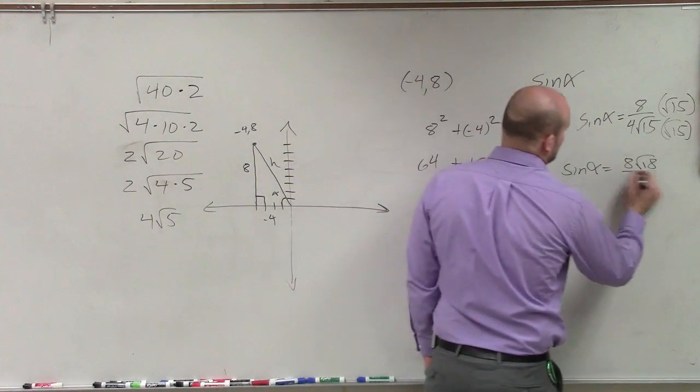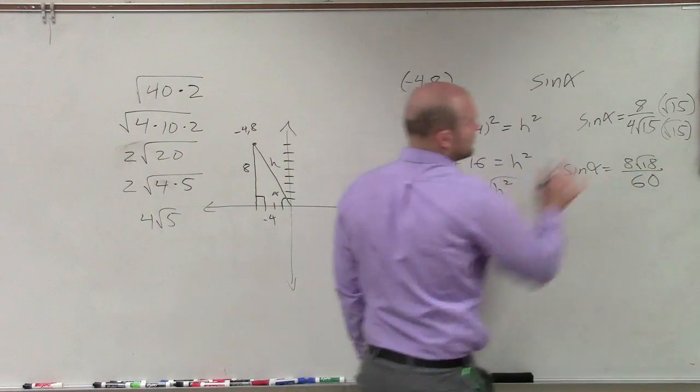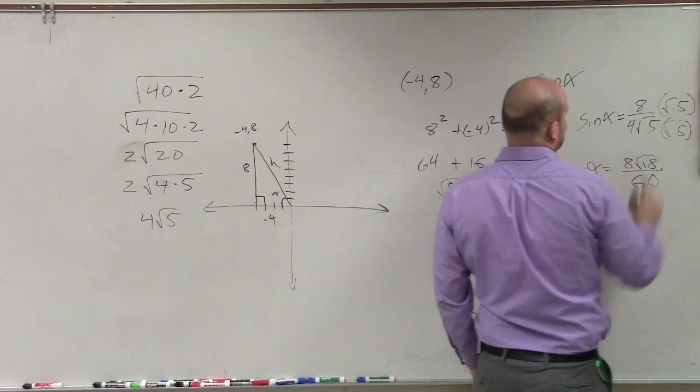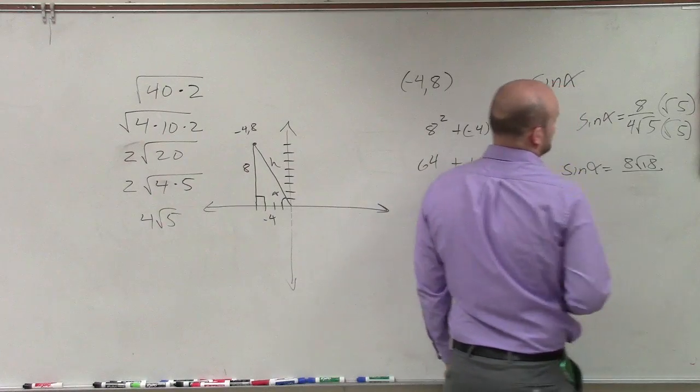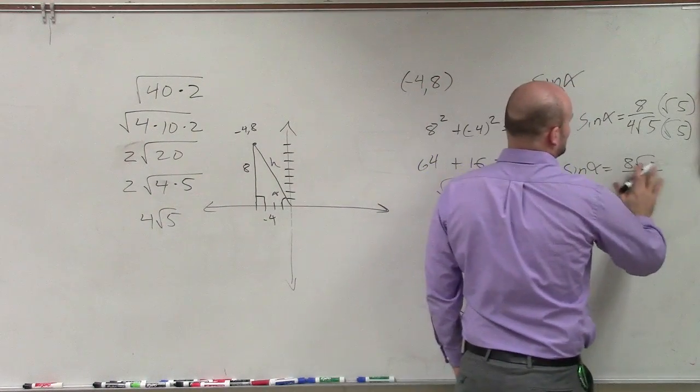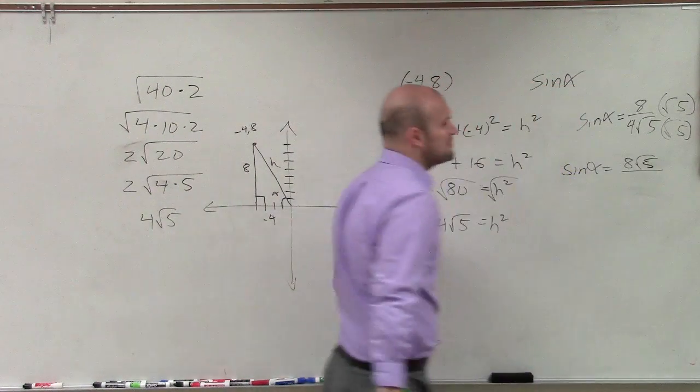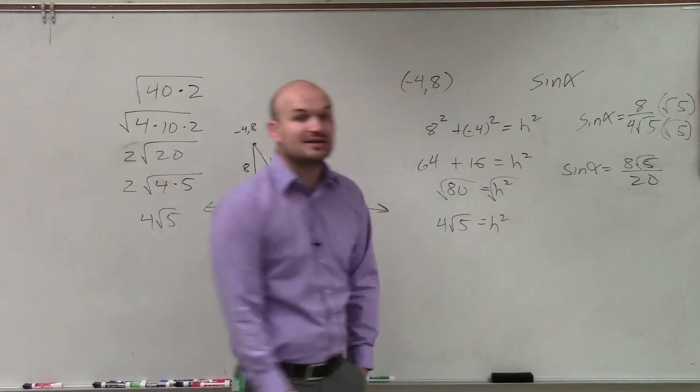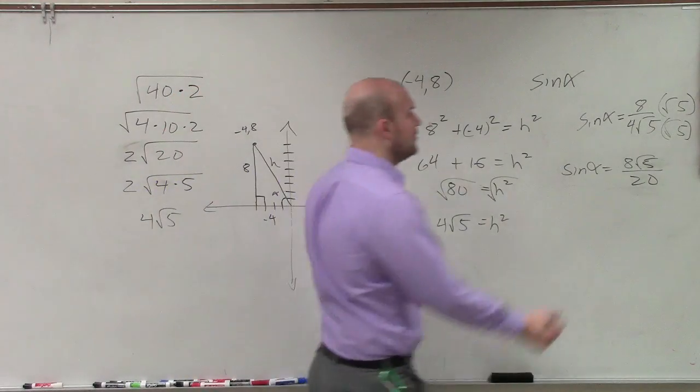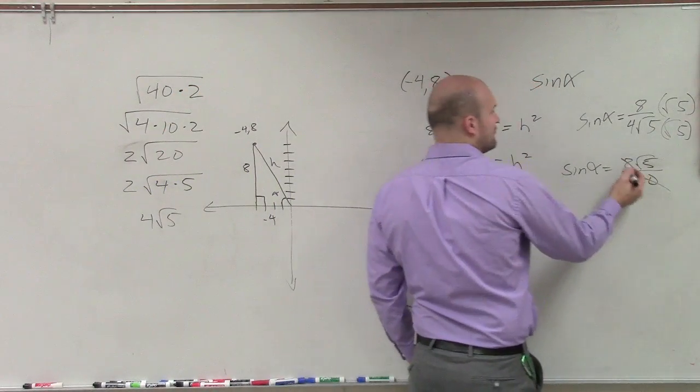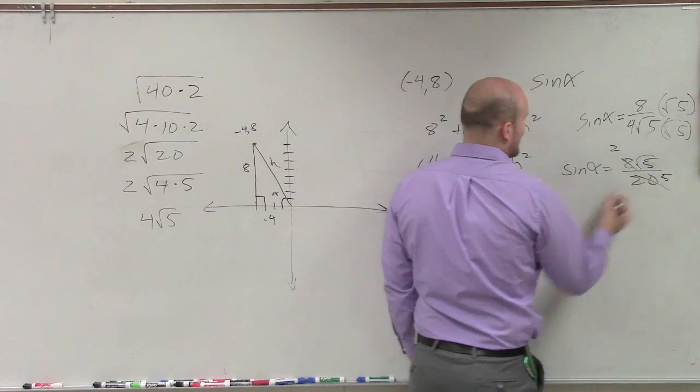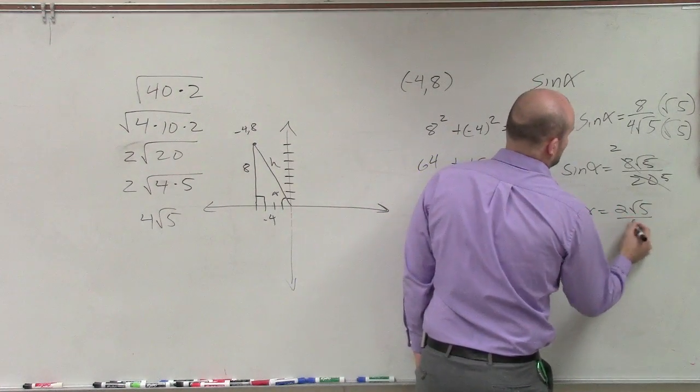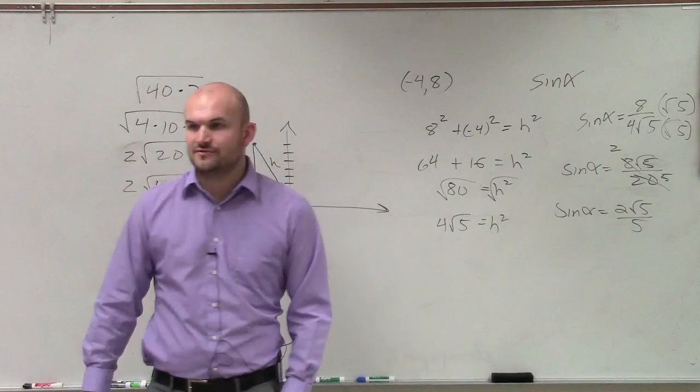You're right, sorry about that. I don't know where 15 came from. So that would be 8 times the square root of 5. Square root of 5 times square root of 5 is 5. 5 times 4 is 20. Then you guys see that we can simplify this again by dividing by 4. So that's going to become 2, 5. So sine of alpha equals 2 square root of 5 over 5. And that's your final solution.